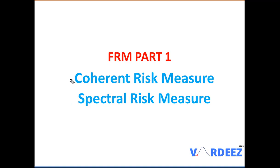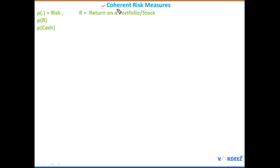Welcome back everyone. Today we are talking about coherent risk measures and spectral risk measures. It's very confusing to most candidates regarding these two measures, but I'm going to break this down. Essentially, a coherent risk measure means there are four properties that any risk measure — be it Value at Risk, standard deviation, or Expected Shortfall — must follow.